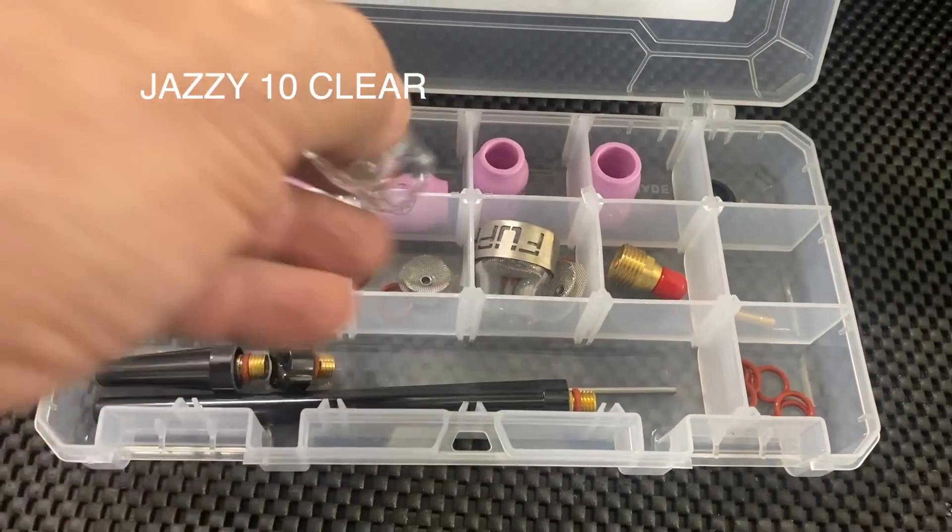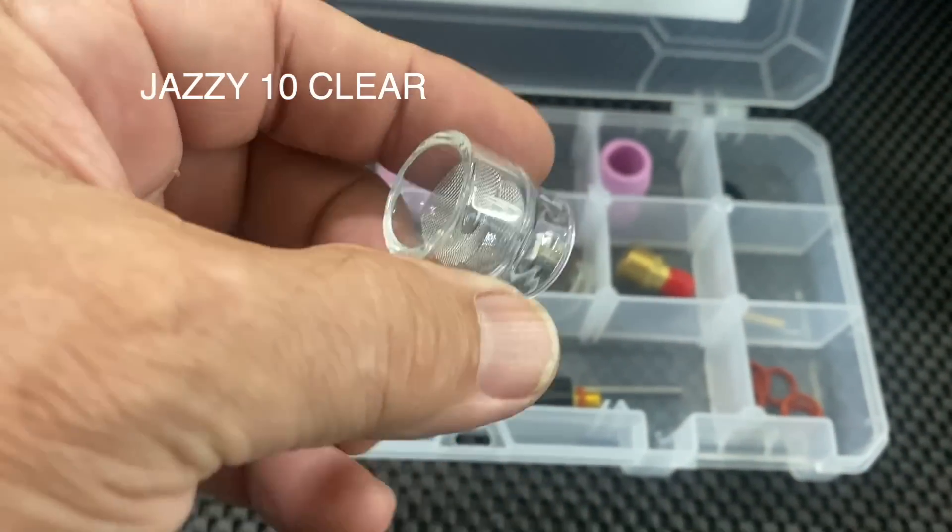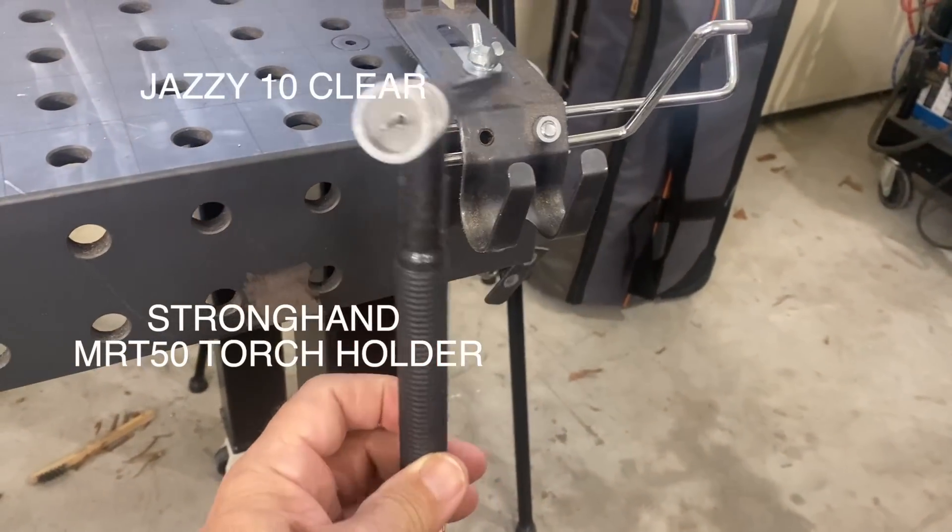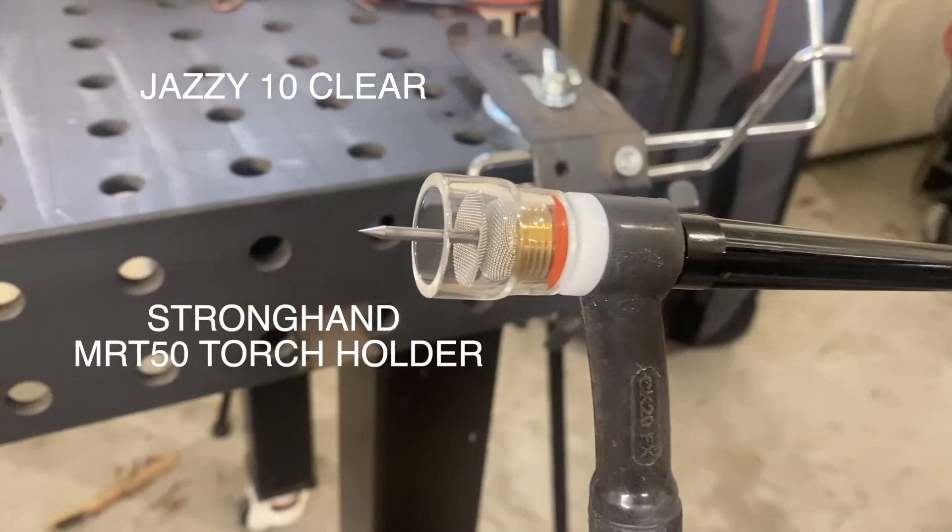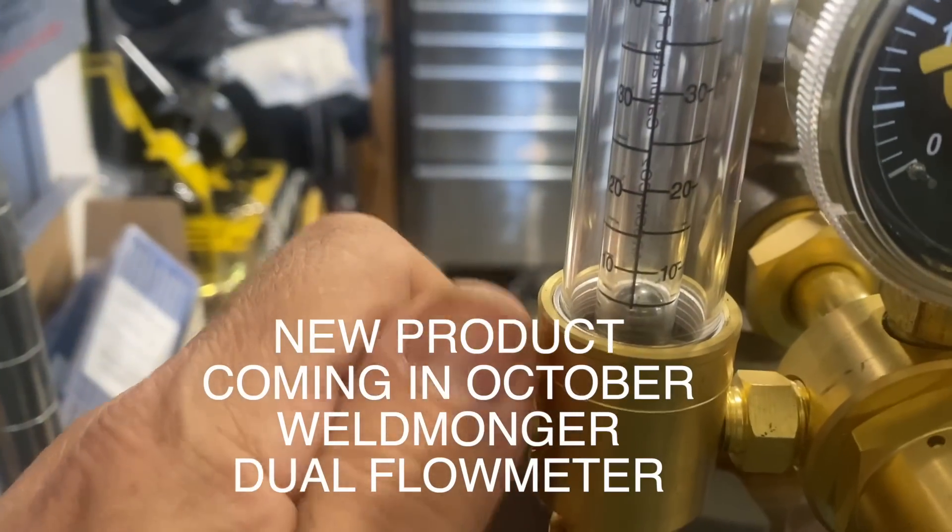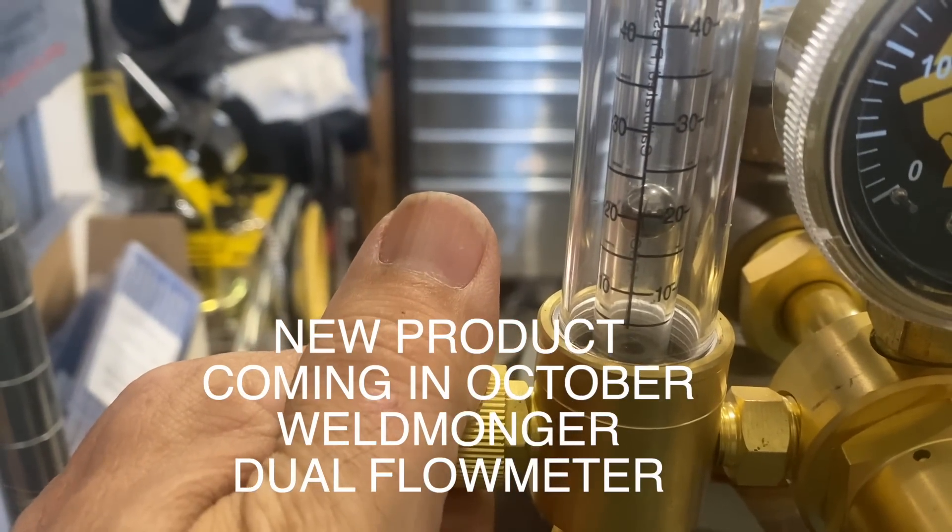I'll be using a number 10 clear cup out of this navigator kit here, a new product on welmonger.com, a strong hand TIG torch holder, and a brand new product that'll be available in October 2024, the Welmonger Dual Flow Meter.